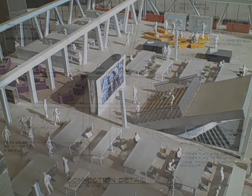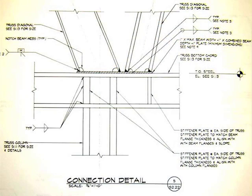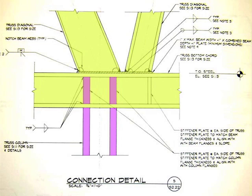Here we see a detail of a typical rigid connection, showing the bottom of the truss, the first floor column flanges, stiffener plates matching the column flanges that are welded into the bottom truss cord, and finally the flanges of the bottom cord itself.